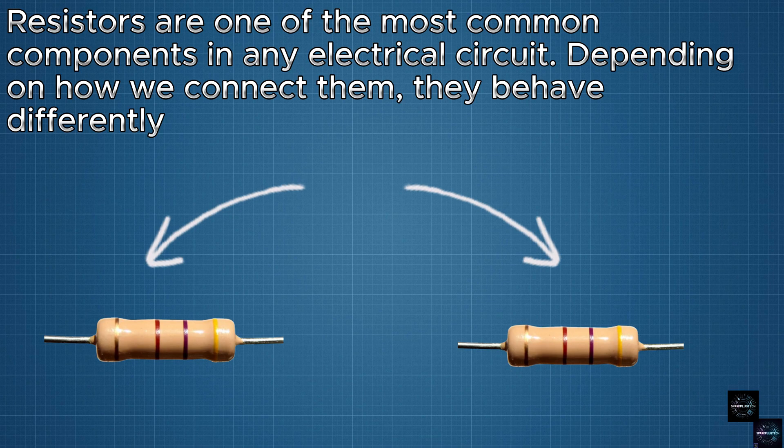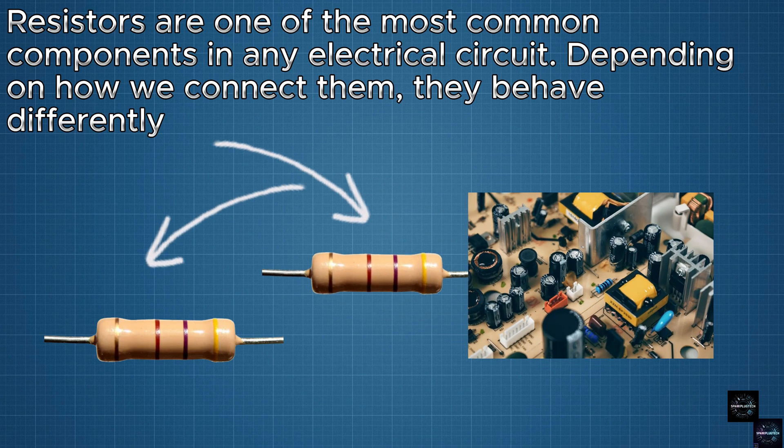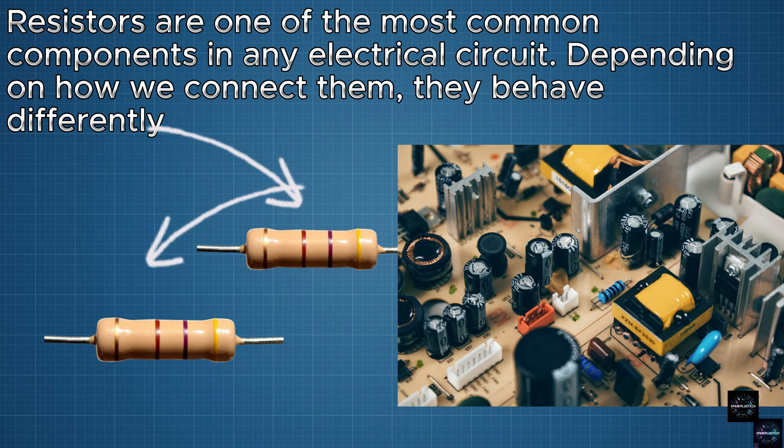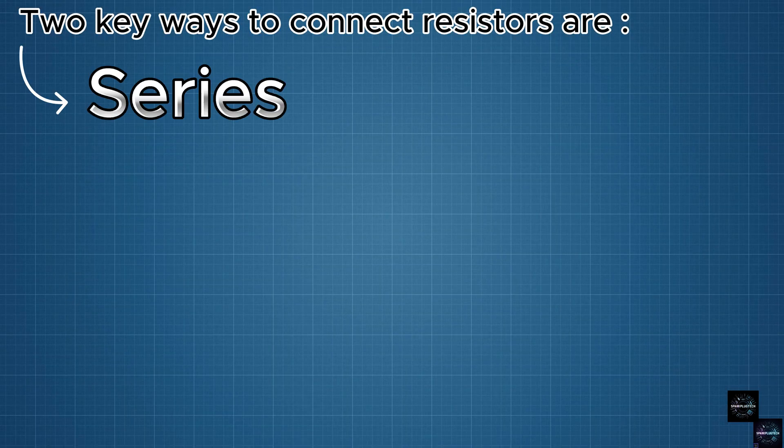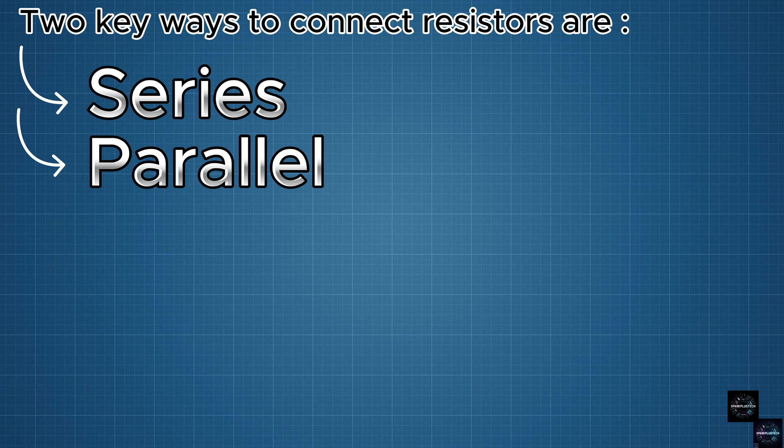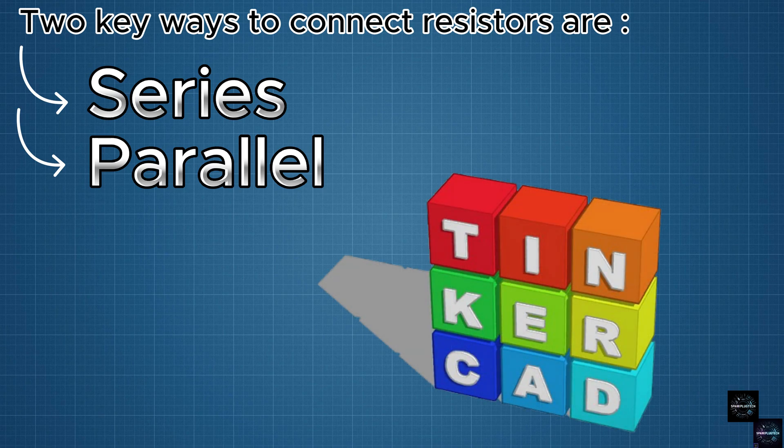Resistors are one of the most common components in any electrical circuit. Depending on how we connect them, they behave differently. Two key ways to connect resistors are in series and in parallel. Let me explain how these configurations work and then simulate them using Tinkercad.